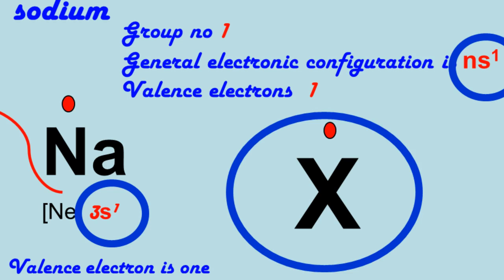Lewis dot symbol of all elements of group number one - you only need to change X with the symbol of the element.